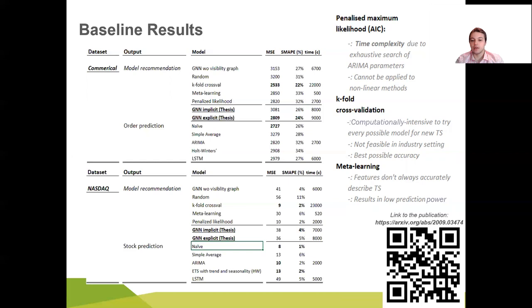However, SMAPE metric was worse. It shows that for some datasets GNN cannot surpass the baselines. However, for commercial dataset GNN has performed better.